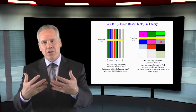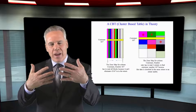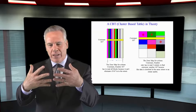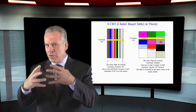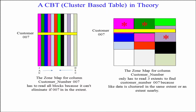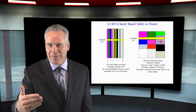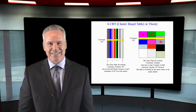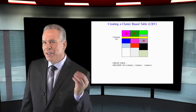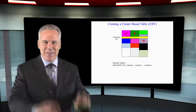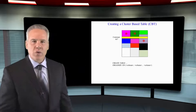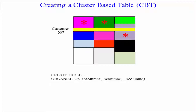When you're able to do cluster-based tables, they're able to put up to four columns and coordinate those, so as you can see here on the right, when we're looking for customer 007, we only have to read three extents to find them, because it's been clustered with the other columns that we also specify. That's the general idea. Here's a better look: customer 007 is only in some of the extents because it's been organized.